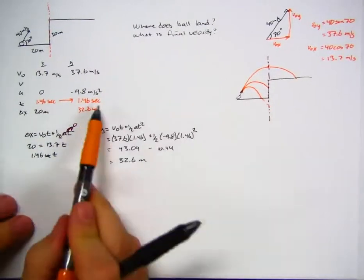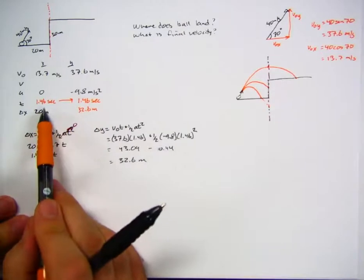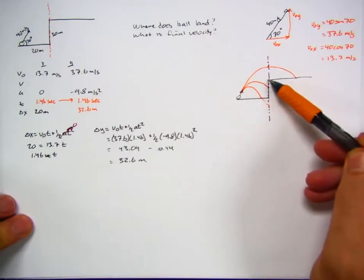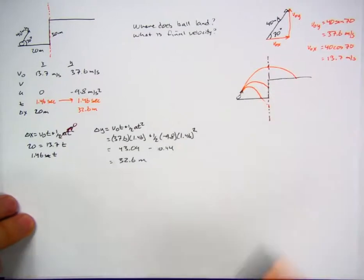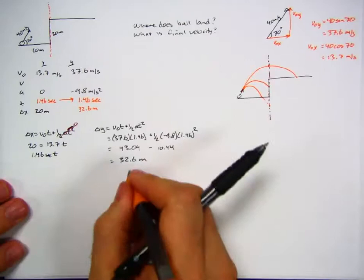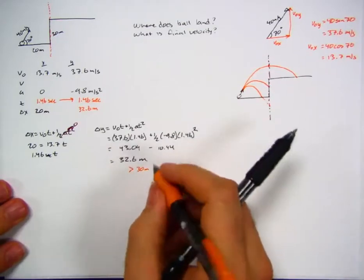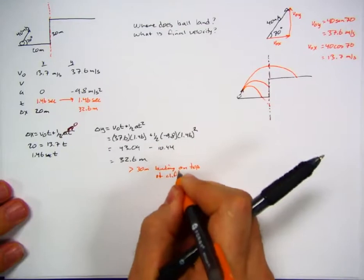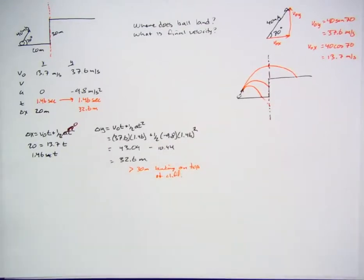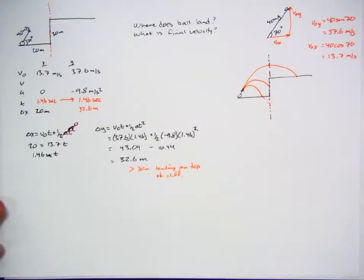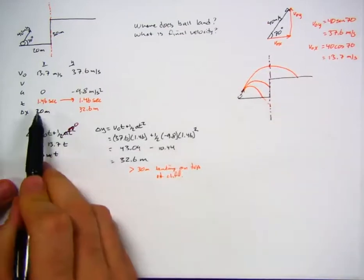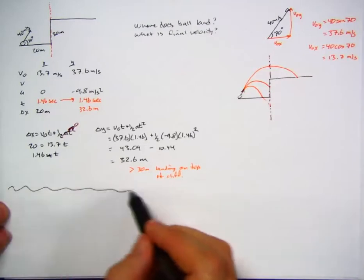Delta y when we've traveled 1.46 seconds, which is 20 meters away, so it is higher than the 30 meters of the cliff. So we clearly have chosen this top path. We have exceeded the height of the cliff by 2.6 meters. Are we done? No. All this means is greater than 30 meters, so we are landing on top of the cliff. The question was where does the ball land. On top of the cliff is not precise enough, so we want to be able to say exactly where does it land. So we have to do another problem with different parameters.